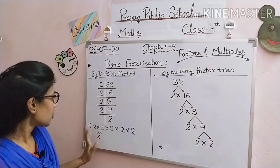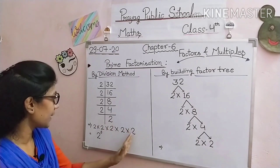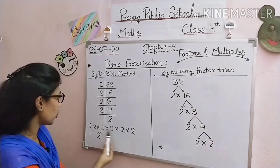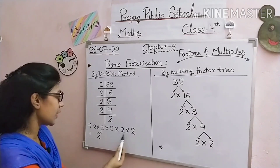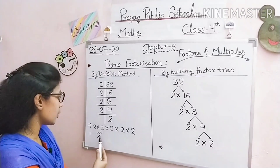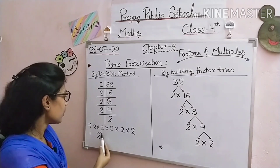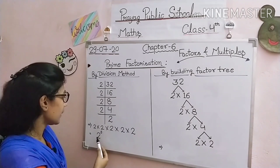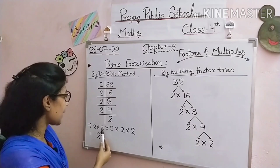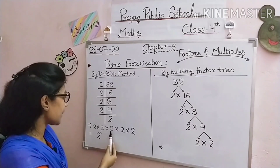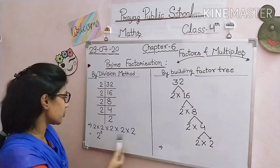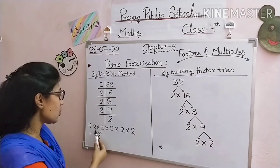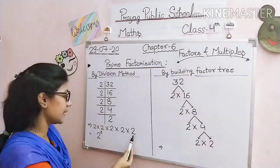2 को हम 5 times multiply करें, या हम इसको 2 की power 5 लिख दें — दोनों का means एक है। जब हम 2 की power 5 को open करेंगे तो हमें मिलेगा: 2 × 2 × 2 × 2 × 2. 2 की power 5 means 2 को हम 5 times multiply करेंगे।